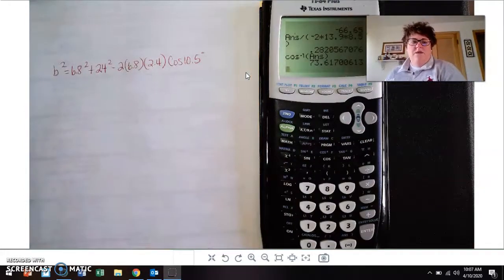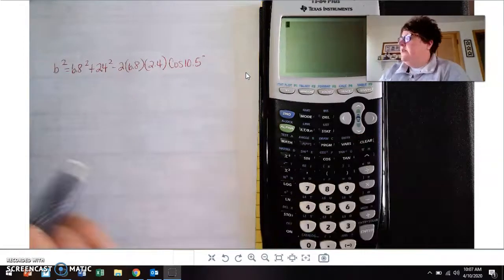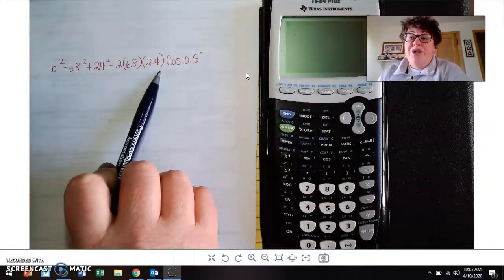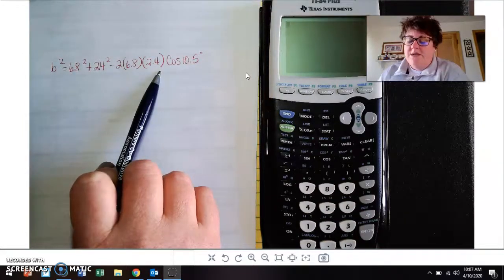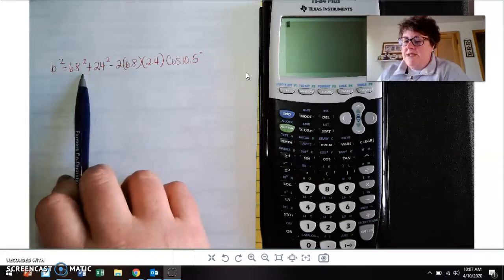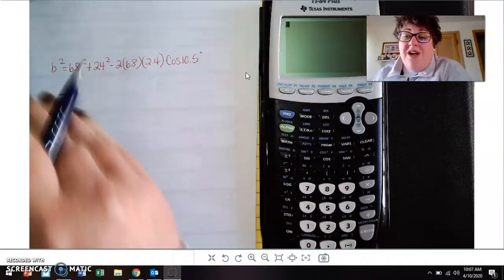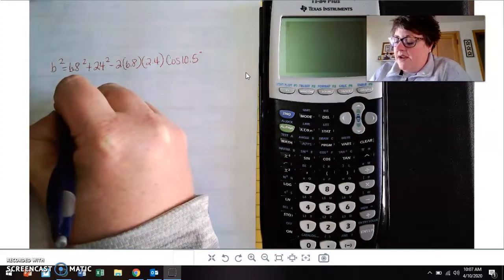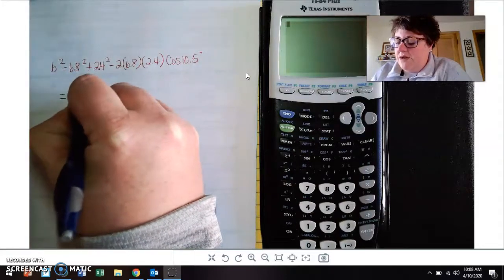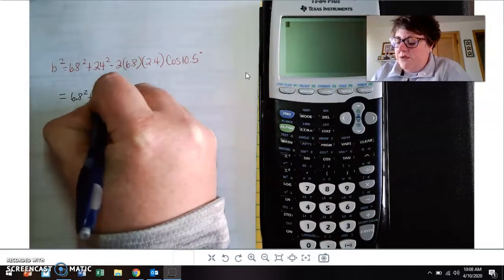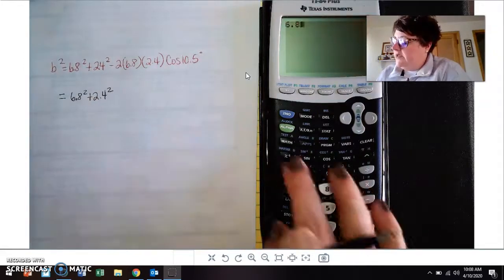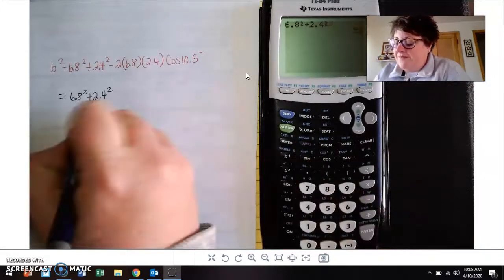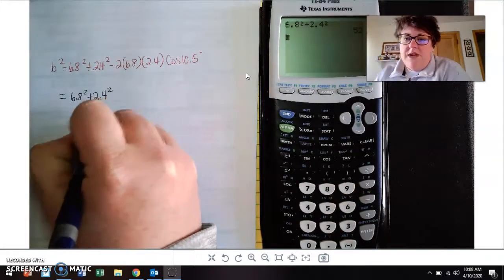That works beautifully. So anytime you're finding a side, this is where you have this long equation, and this is from number two, from the second example in your notes. The way that I do this, and again you can put it all in at one time but you've got to add parentheses, I start out and do 6.8 squared plus 2.4 squared. So 6.8 squared plus 2.4 squared, and then I press enter and get that value.